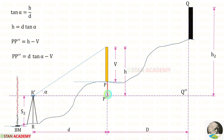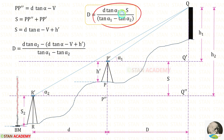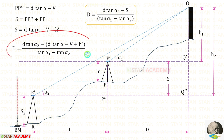The height PP dash equals H minus v. Substituting H, we get PP dash equals D tan alpha minus v. Now returning to the previous setup: S equals P double dash P plus PP dash. Substituting the expressions, and replacing S with this expression, this gives us the formula to find the distance D.